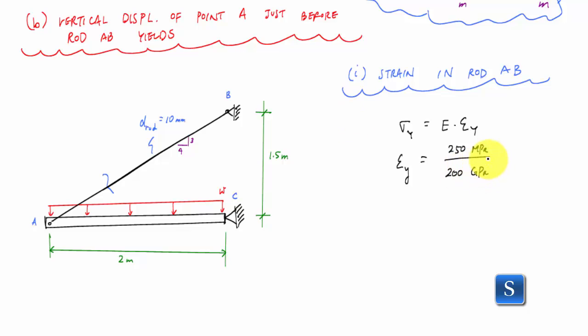Here we've got to again make sure that we do the unit conversions. Another way that you could do this is just say 250 times 10 to the 6, so I'm just converting everything back to Pascals over 200 times 10 to the 9th Pascals. And this is 1.25 times 10 to the minus 3 strain.